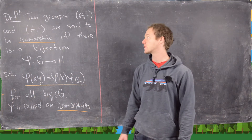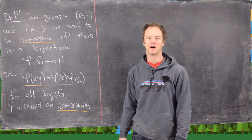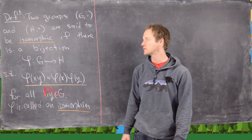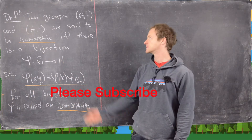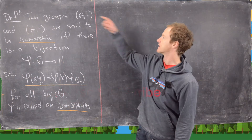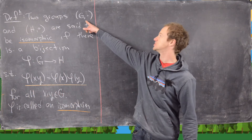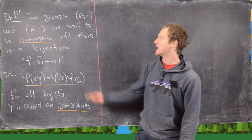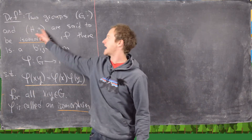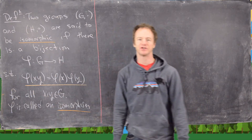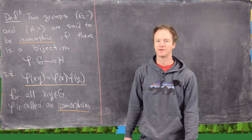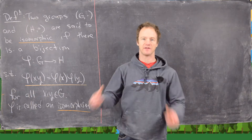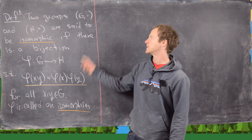In this video we want to look at the notion of an isomorphism between two groups and some examples. So let's say we've got two groups G with operation dot and another one H with operation circle, although often we won't write those — we'll just write the elements next to each other.